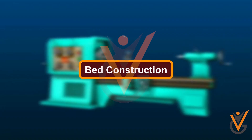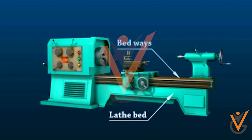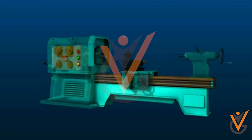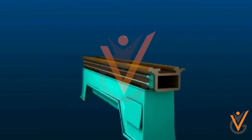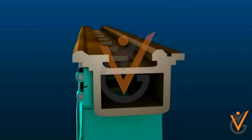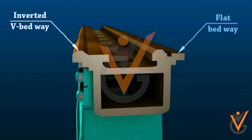Bed construction. The bed of the lathe machine is the base on which all the other parts of the lathe are mounted. Its upper surface is either scraped or ground, and the guiding and sliding surfaces are provided. The bed consists of heavy metal slides running lengthwise with ways formed upon them, and is rigidly supported by cross girths.